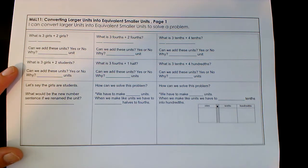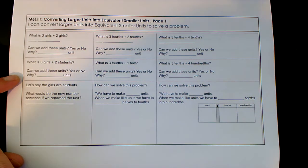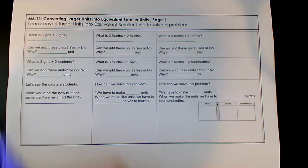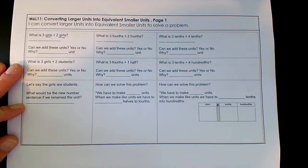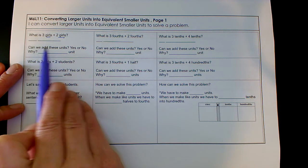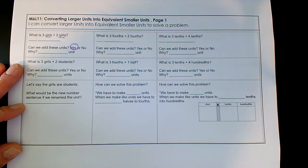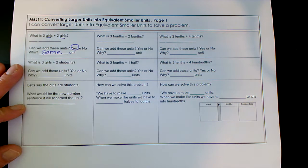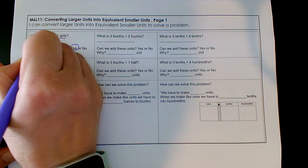So we're going to answer some of these questions as we go along. It says, what is three girls plus two girls? What is the number and what are the units? In this story problem, the unit or number sentence is girls. Are those the same? Can we add these units? Yes. Why can we add them? Because they are the same unit. Three girls plus two girls is five girls.